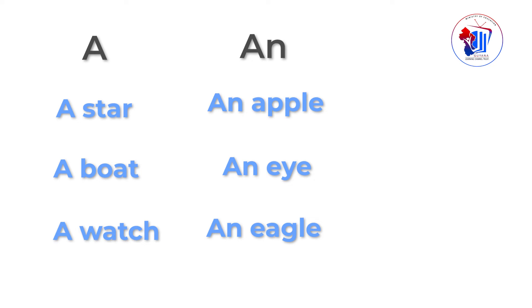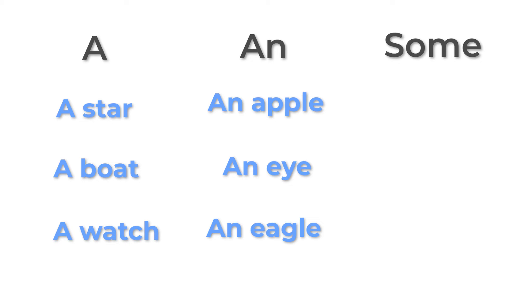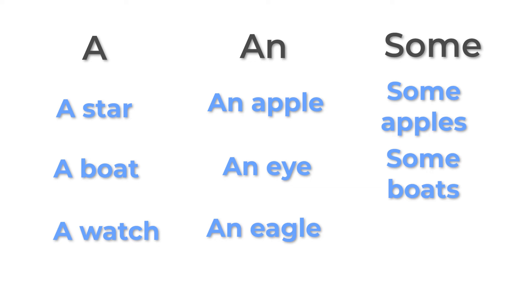Por otro lado, el artículo indefinido para referirnos a las palabras en plural es SOME. Solo tenemos que fijarnos si las palabras son plurales. En este sentido, si estamos hablando de apples, que son manzanas, decimos some apples. Boats, que son barcos, decimos some boats. Stars, que son estrellas, decimos some stars.